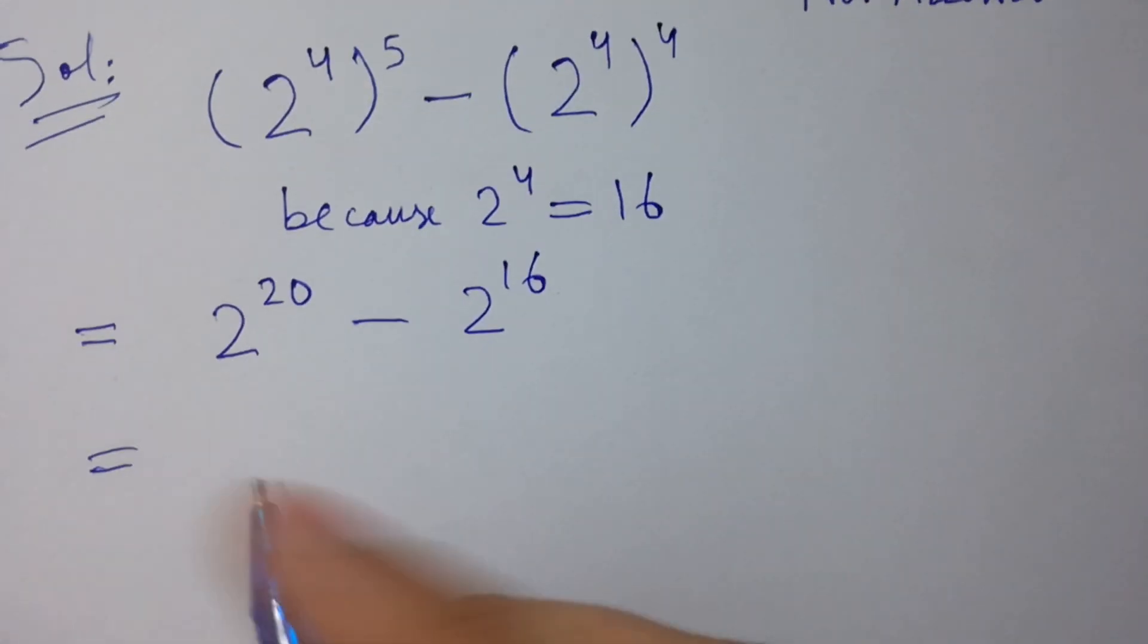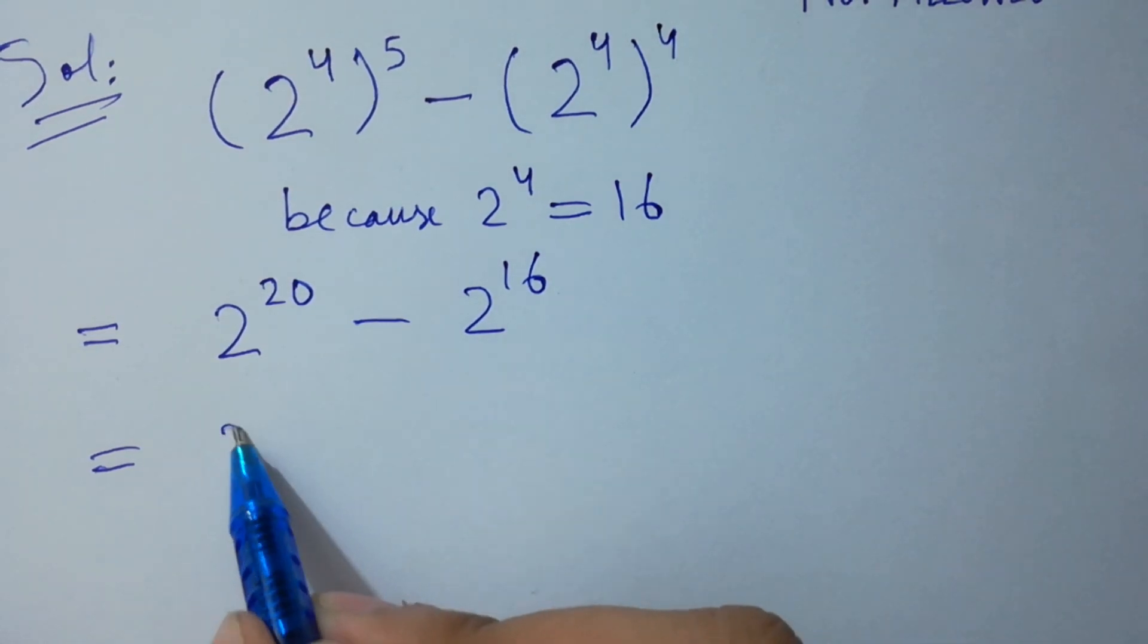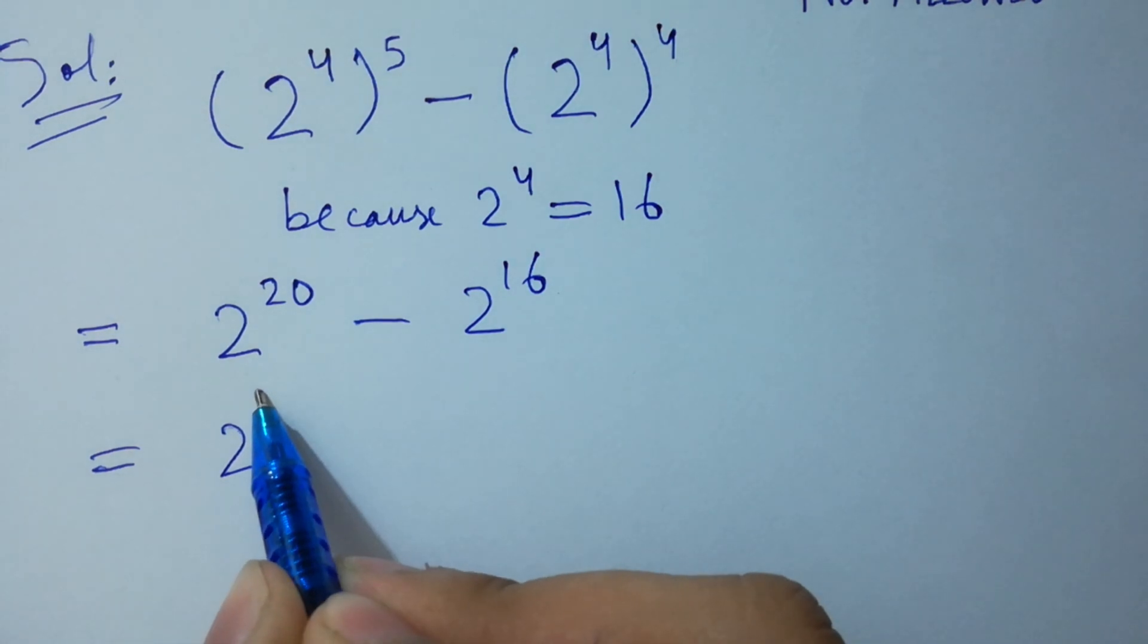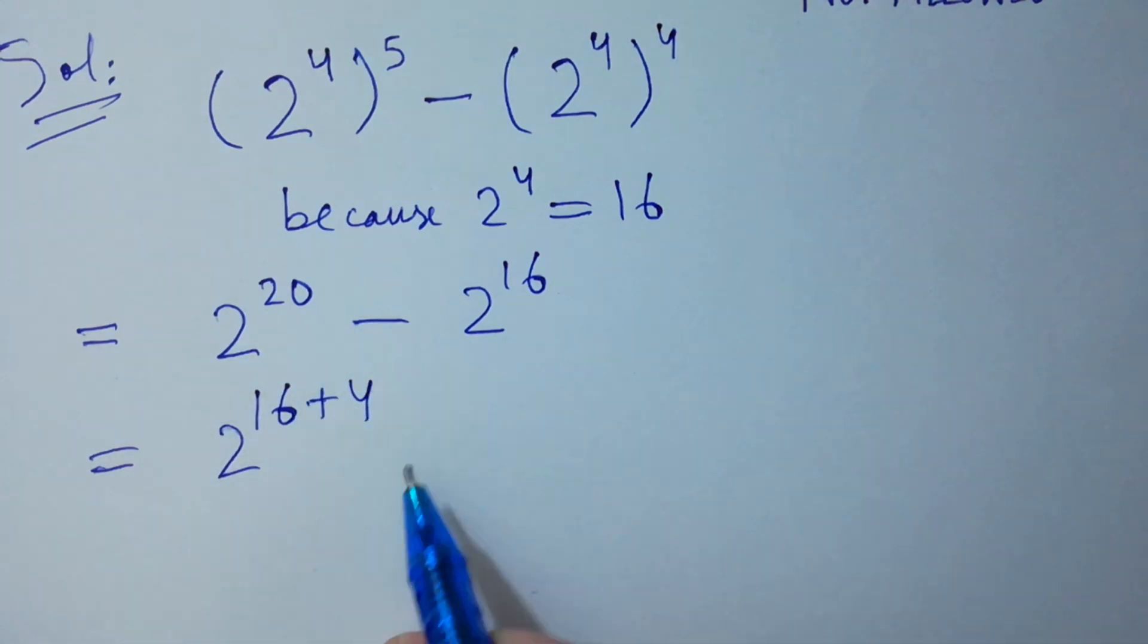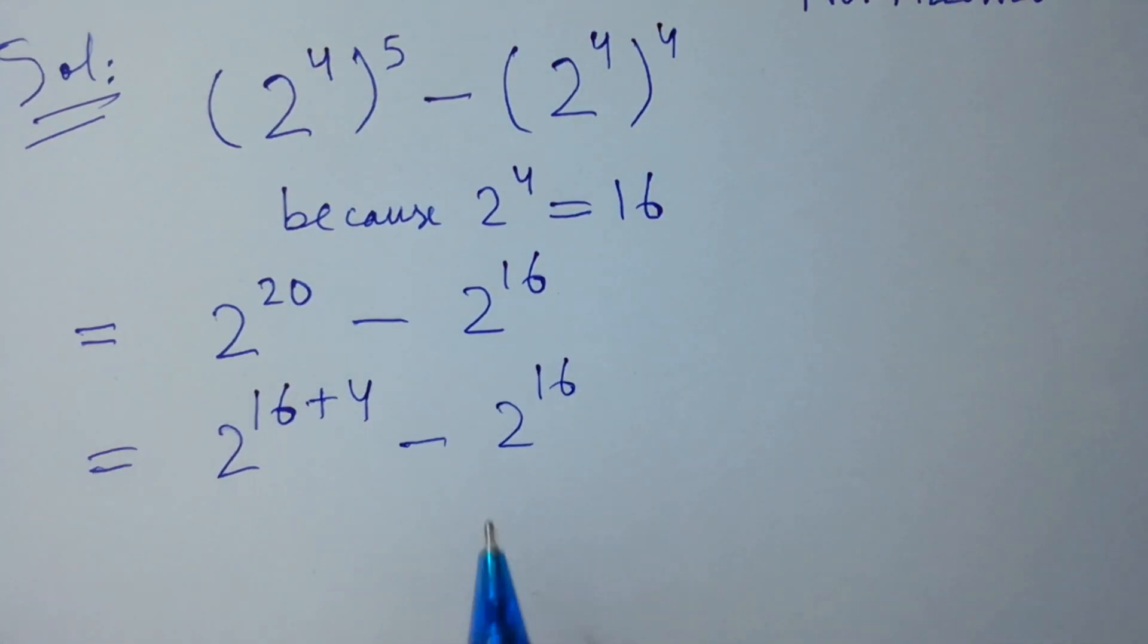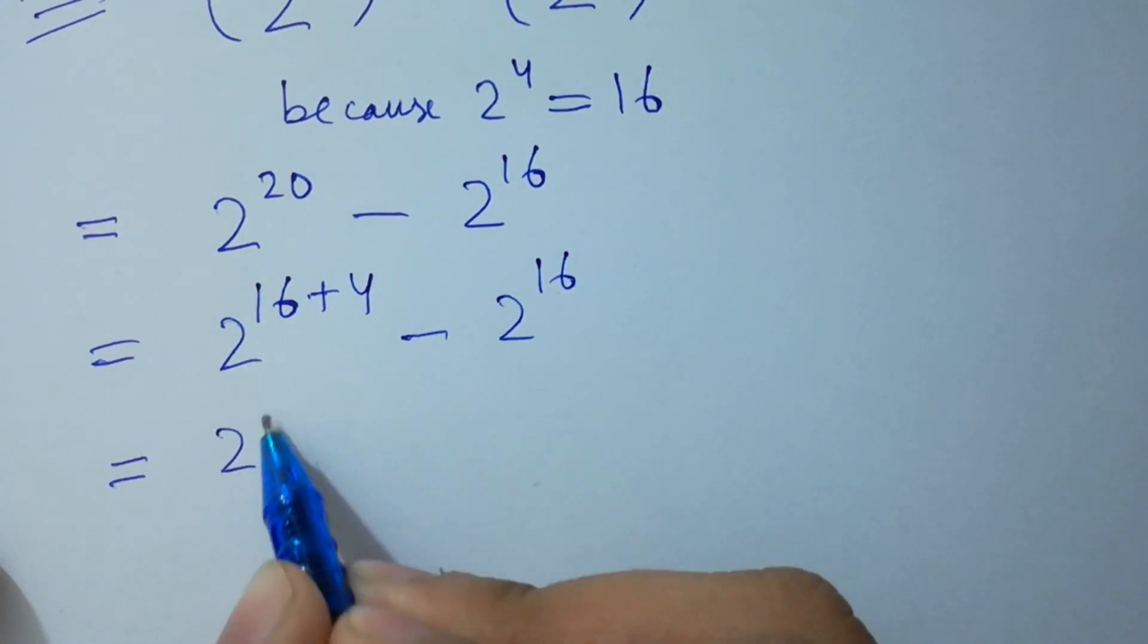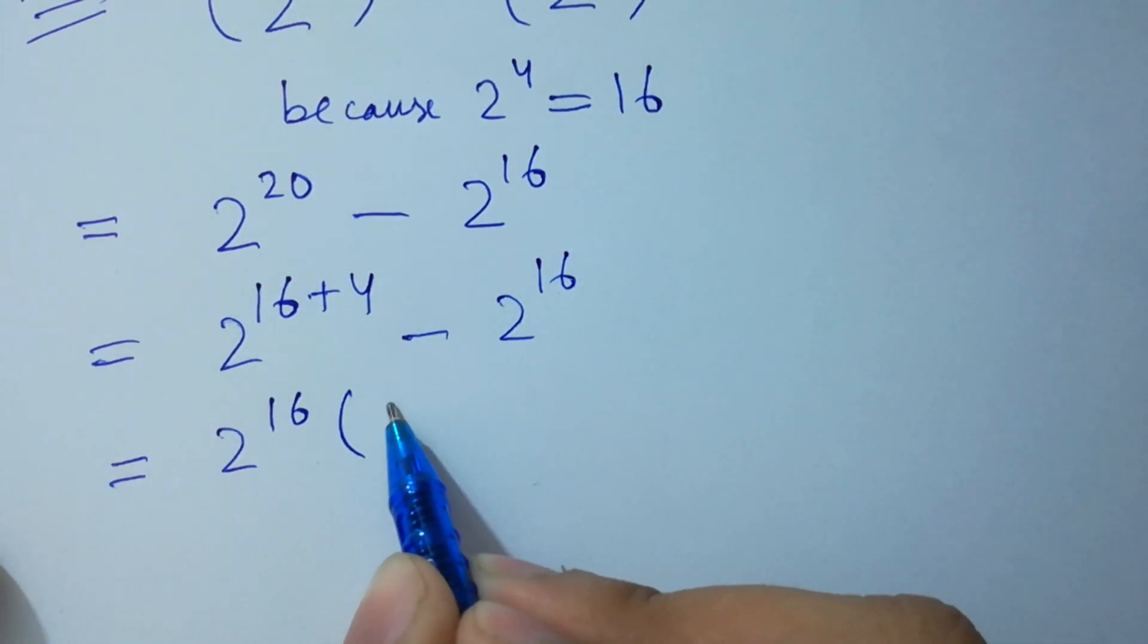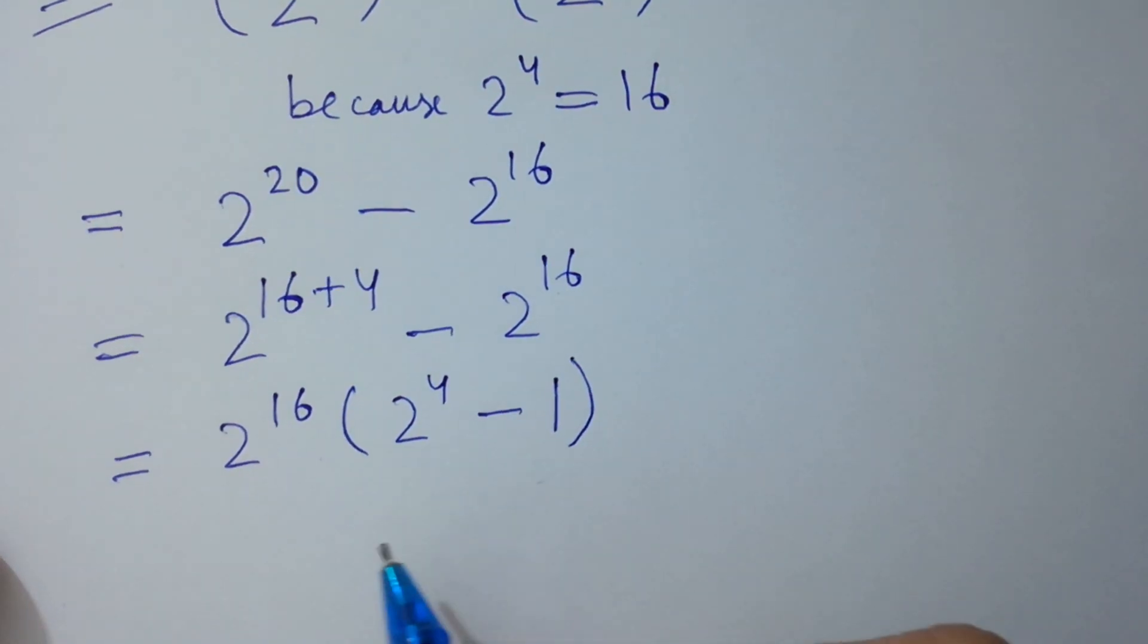Here, take 2^16 as common. We can write this as 2^(16+4) - 2^16. Taking 2^16 common, we have 2^16 times (2^4 - 1).